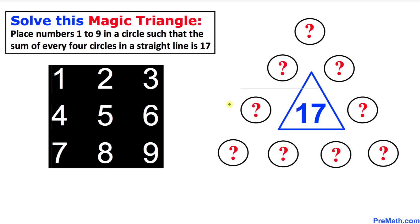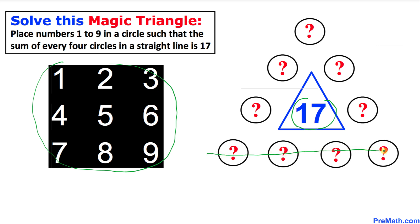Welcome to Pre-Math. In this video tutorial we are going to solve a magic triangle. We have nine circles and nine numbers. We are supposed to place numbers from one through nine in a circle such that the sum of every four circles in a straight line equals 17 — for the bottom line, the left diagonal, and the right diagonal.